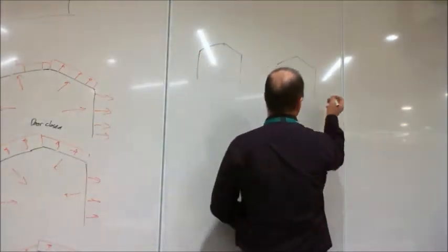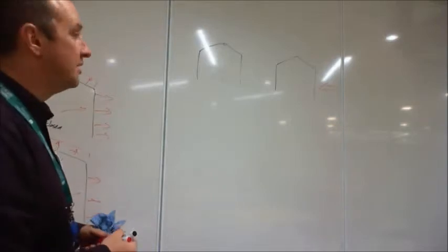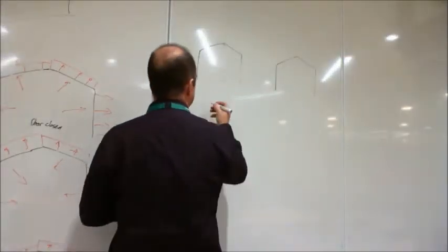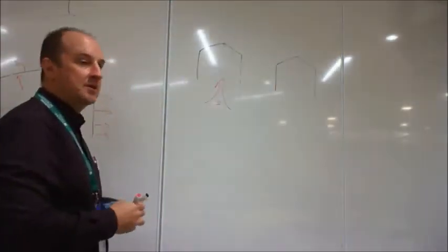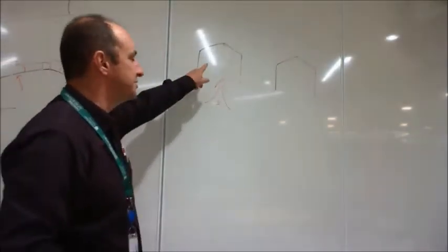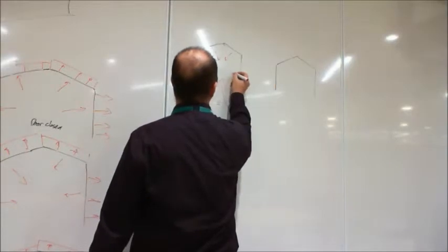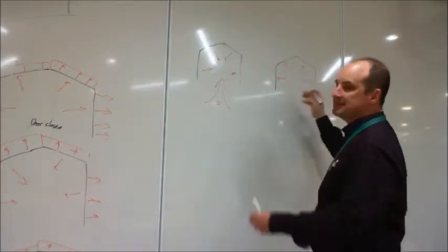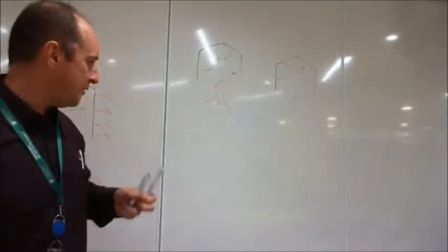We blow the wind from the other direction and do it all again. Now let's blow the wind into the building from the south — that's a south wind. We've got different load cases on the roof, and we still have one internal pressure possibly inflating or zero, and one internal pressure possibly deflating or zero.